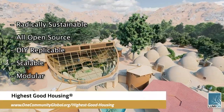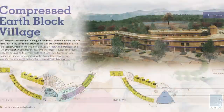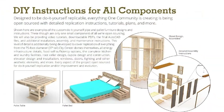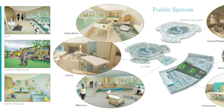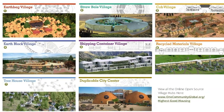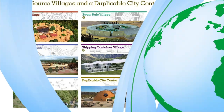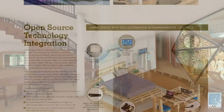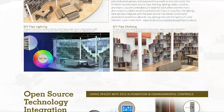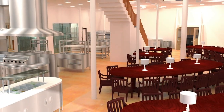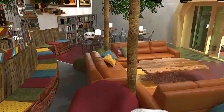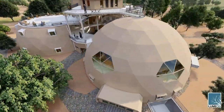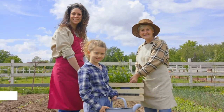One Community's approach to highest good housing is eco-artistic home building that is affordable, sustainable, do-it-yourself, duplicable, resource and space efficient, and consists of seven different sustainably constructed village models. One Community is also creating an open source duplicable city center designed to be LEED Platinum certified, provide 12 guest rooms, dining for over 150 people, and laundry and recreation space for over 300 people — all while saving money, time, space, and resources.